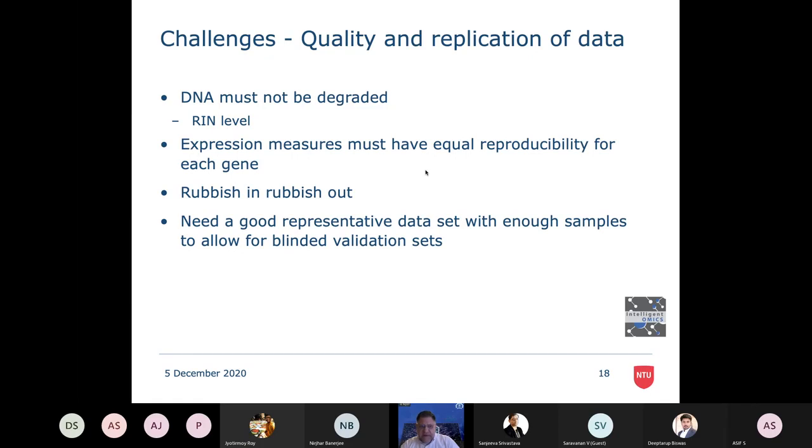The way we measure every element, it can be an expression measure, it can be a quantitation, must have equal reproducibility for every element. In other words, if we're very good at measuring some parts of the data and very bad at measuring other parts, then the things that we're good at measuring become very good at predicting and the other things just get left behind and we lose information that way.